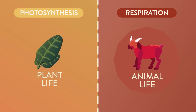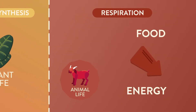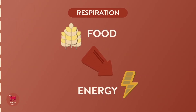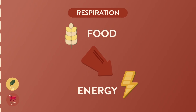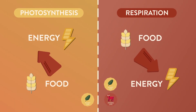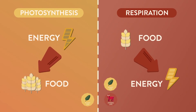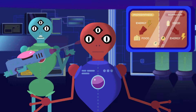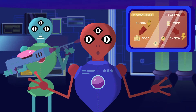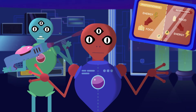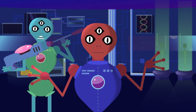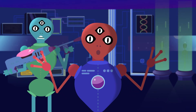Animal life uses respiration, in which food is used to release energy. Plant life uses respiration as well, but can also use photosynthesis, in which energy is used to produce food. Why they do not live off the gravitational plasm energies of dark matter, we do not know.